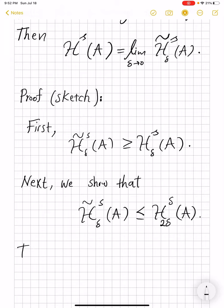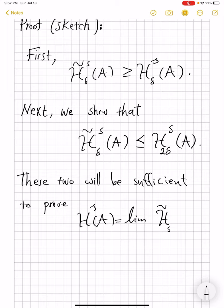And these two will be sufficient to prove that H^s of A is limit of H̃^s_δ of A as delta goes to 0, because the first inequality will give one direction of an inequality, and the other one, because letting delta go to 0 is the same as letting 2 delta go to 0, the end result would provide the opposite inequality. So our claim would follow if we establish this one.